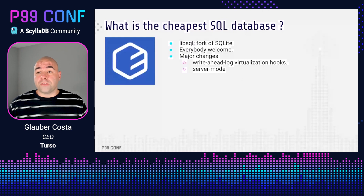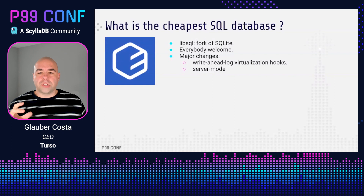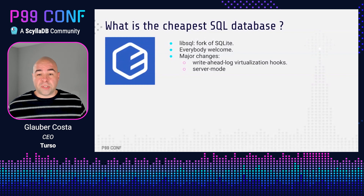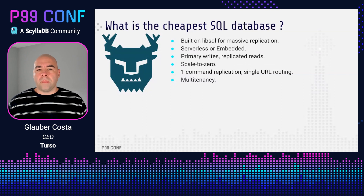The LibSQL project is a fork of SQLite that is open contribution. It has some changes that have nothing to do with just replication, but the most important changes for the purpose of this talk are two. First, write-ahead log virtualization so we can consume changes to the database as they happen and replicate them. And second, an HTTP-based protocol and server implementation. This is because a lot of the relevant edge providers these days are serverless — in those environments, you won't have access to a file system.